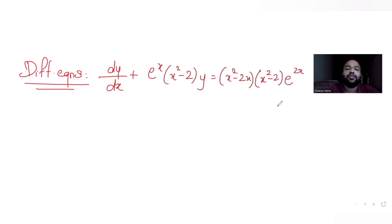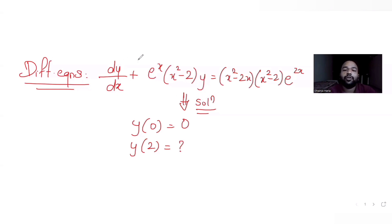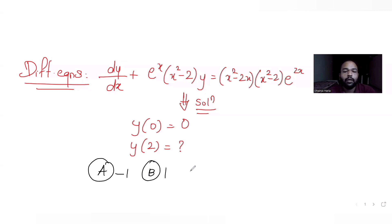We have been told that this differential equation has a solution that satisfies y(0) = 0, and we need to find the value of y when x = 2. The options given to us are minus 1, 1, 0, and a fourth option. We need to figure out which one is the correct answer.